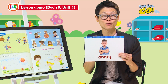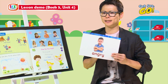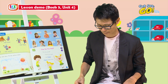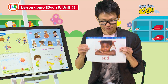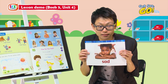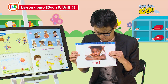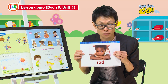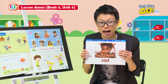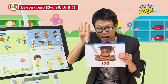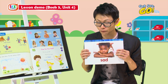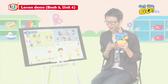You got it right! You did the action and you said the word 'angry' — very good. And the next one — what can you see? Sad! Yes, you're correct, you said 'sad,' and you did the action. You showed me a very sad face — that's very good!